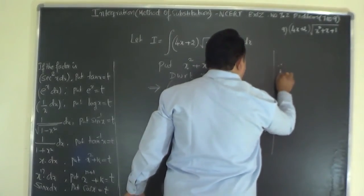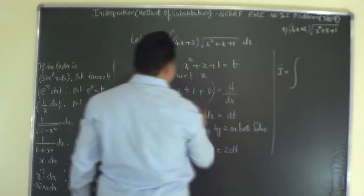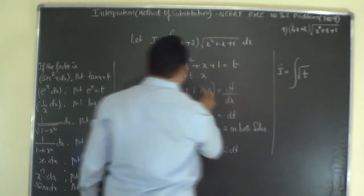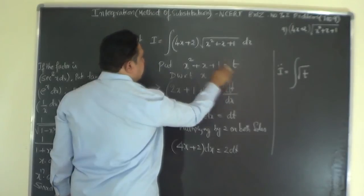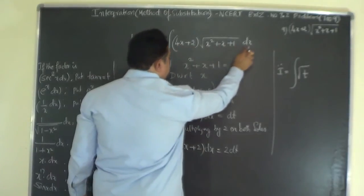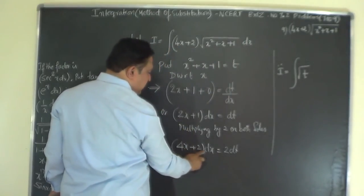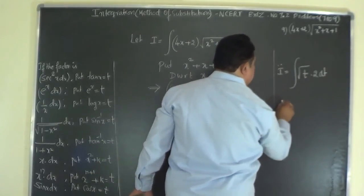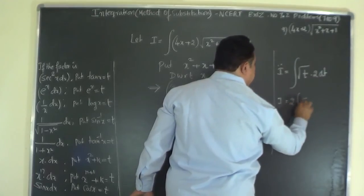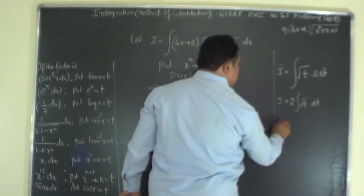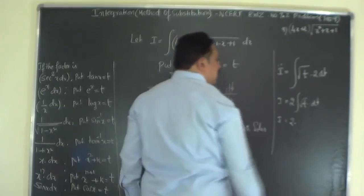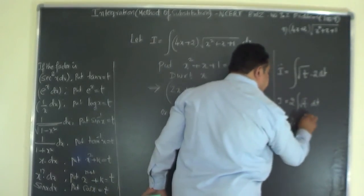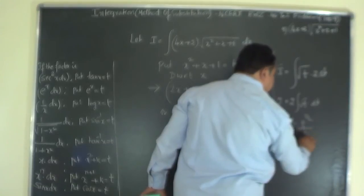Therefore I equals the integral of root of (x²+x+1) — which is root t — times (4x+2) dx — which is 2 dt. Taking the constant 2 outside: I equals 2 times the integral of root t dt, which is 2 times t^(3/2) over (3/2) plus C.